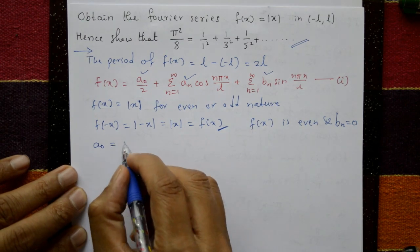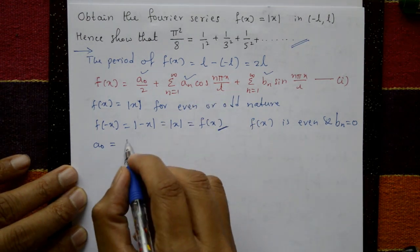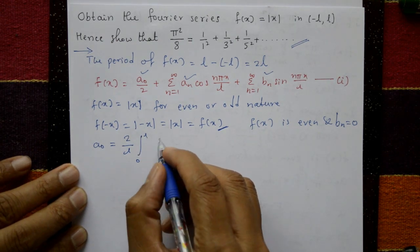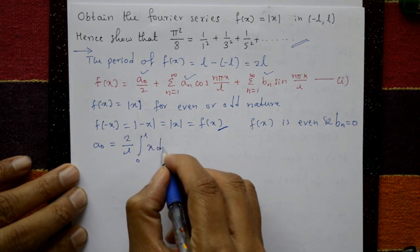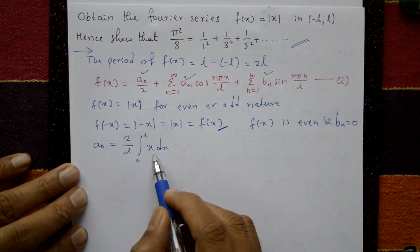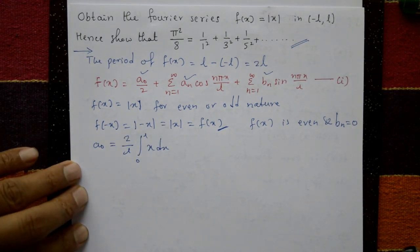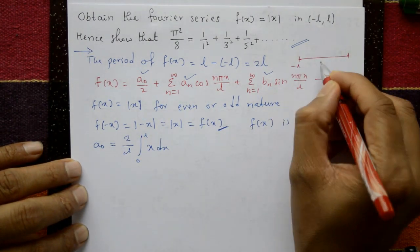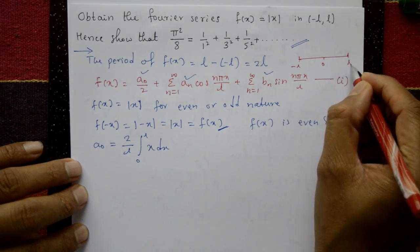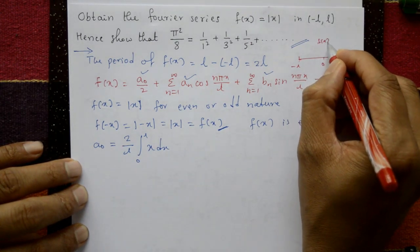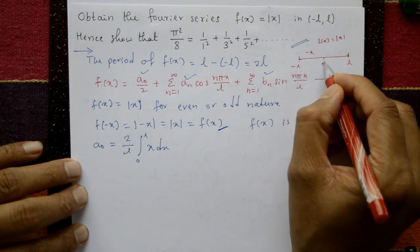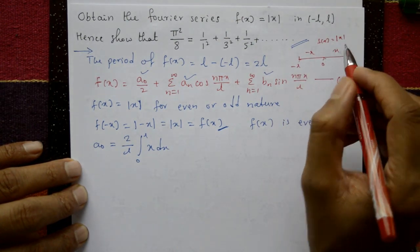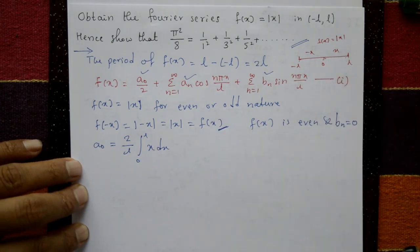First compute a₀. a₀ is equal to (2/l) times the integration from 0 to l of f(x) dx. Since f(x) = |x|, on the interval 0 to l, f(x) = x. On the interval minus l to 0, it is minus x, but on 0 to l, f(x) = x.